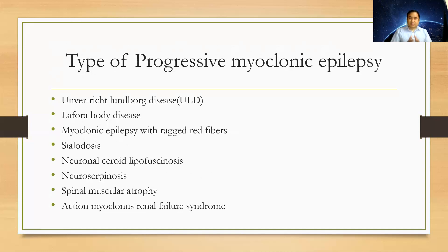The causes include: Unverricht-Lundborg disease, Lafora body disease, myoclonic epilepsy with ragged red fibers (MERRF) — a mitochondrial condition — neuronal ceroid lipofuscinosis (NCL), neuroserpinosis, spinal muscular atrophy, and action myoclonus renal syndrome.